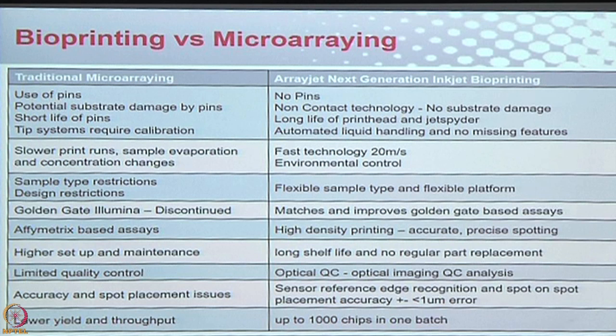At the end of the run, if antibody 12 is missing, IRIS will go back and print antibody 12 to all thousand slides in case you forgot to load it or it was missed during aspiration. It makes sure all the data you get is a complete set, not missing content — which we do see with other arraying technologies. Bioprinting completely bypasses that missing content problem.